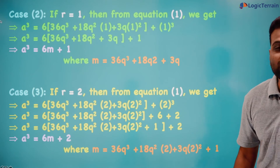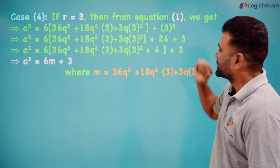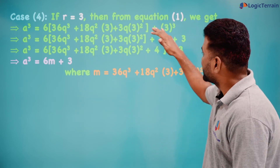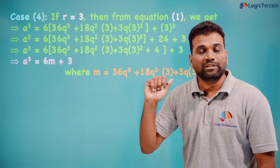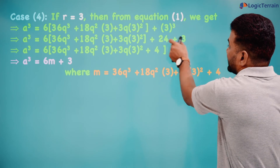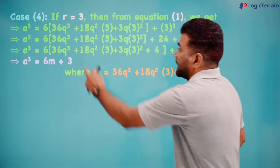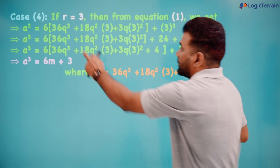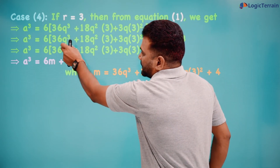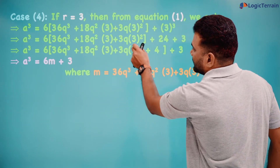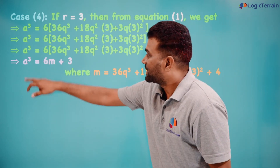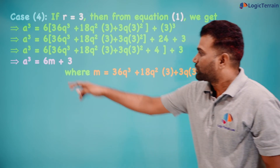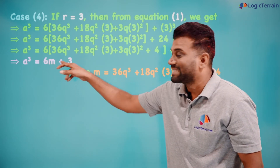Case 4: if r = 3, substituting into Equation 1 and computing 3³ = 27, we split 27 into 24 + 3 since 24 is a multiple of 6. Taking 6 common from those terms: a³ = 6(36q³ + 54q² + 9q + 4) + 3, written as a³ = 6m + 3, where m equals the entire bracket expression. The cube of the positive integer is of the form 6m + r, here r is 3.